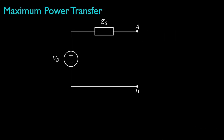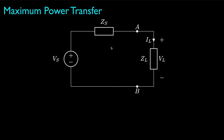Let's start by thinking about a situation where we have a voltage source, V_S, in series with the source impedance, Z_S, all operating at some particular frequency. We'd like to provide power to a load with an impedance Z_L, which will induce a load voltage drop V_L and a load current I_L.